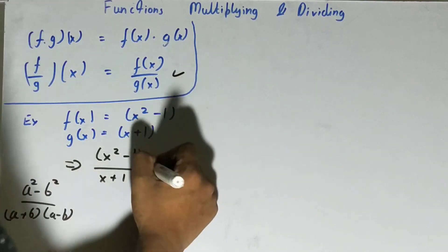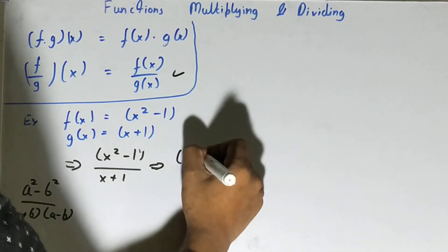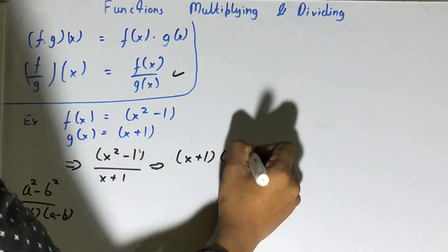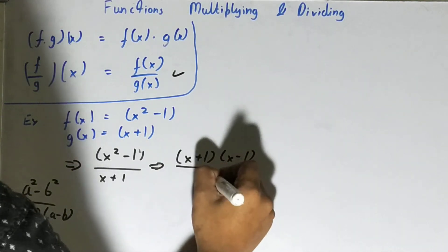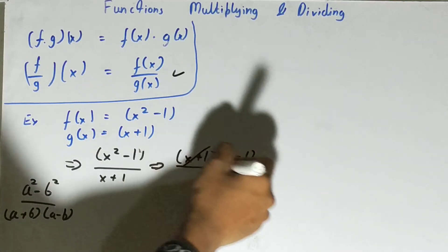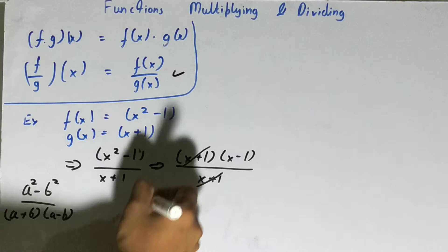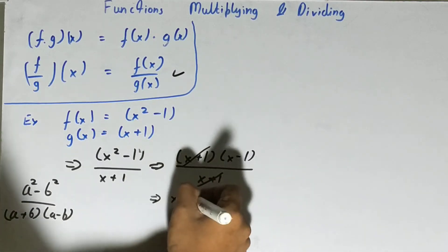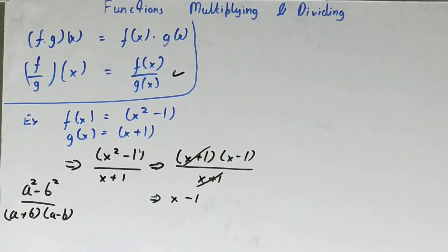So let's try to factorize it. So it will be x plus one times x minus one upon x plus one. Can we simplify? Can we cancel out something? Yes, we can cancel out this x plus one with this x plus one, and we will have our answer as x minus one.